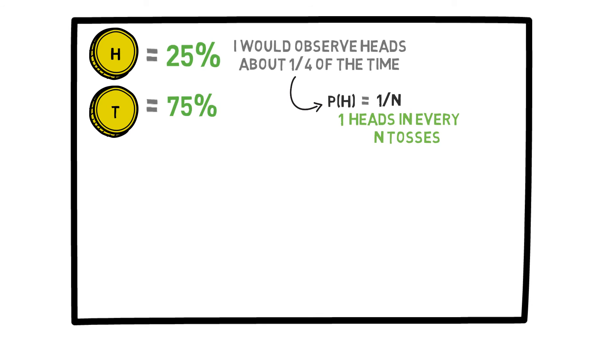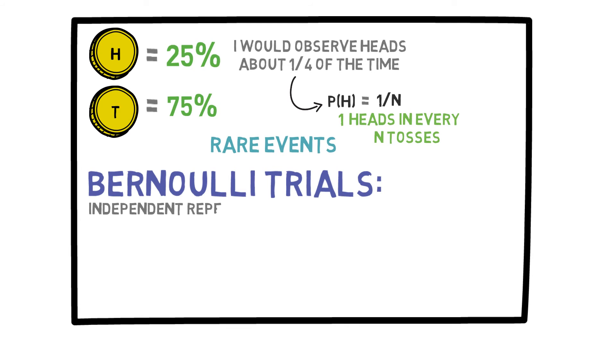So, what am I getting at here? These are examples of rare events, and in probability theory, experiments like the one just mentioned are called Bernoulli trials. Basically, Bernoulli trials are independent repetitions of experiments that have two possible outcomes.